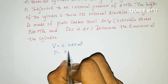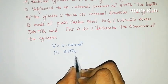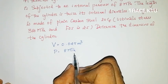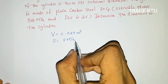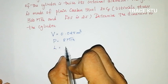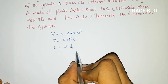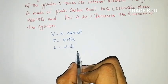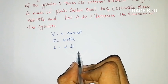This is the volume: V is equal to 0.025 m³. The internal pressure is equal to 8 MPa. Next, the length of the cylinder — the length of the cylinder is twice its internal diameter.